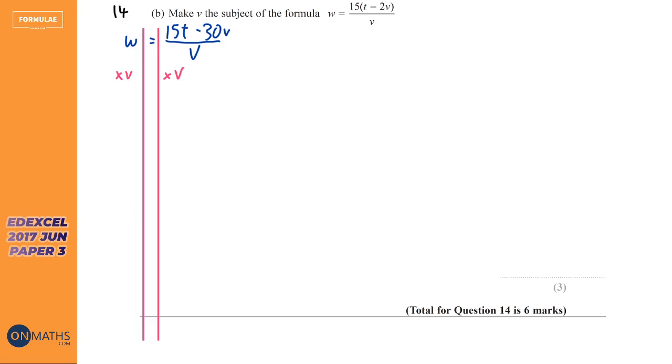And I'm kind of not worried about making sure that I get it all in its own or anything like that. I'm just worried about getting rid of it from the bracket, getting rid of it from the fraction. So we'll get WV equals 15T minus 30V. Next thing I want to do is get all the V terms on the same side.